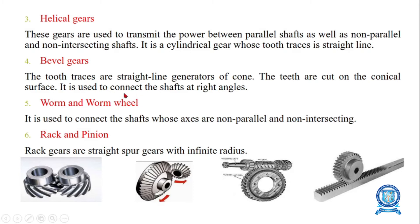Worm and worm wheel: this is normally connected to shafts whose axes are non-parallel and non-intersecting. The worm gear resembles a screw, and a worm is usually meshed with an ordinary looped disc-shaped gear called the worm wheel. It is used to connect shafts whose axes are non-parallel and non-intersecting.